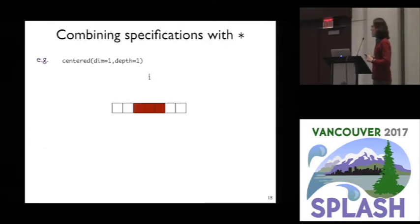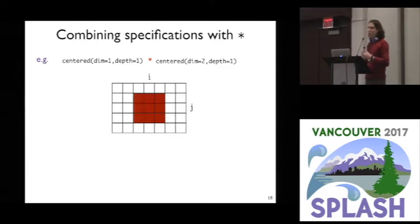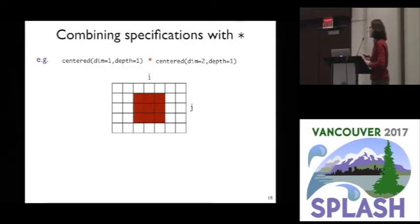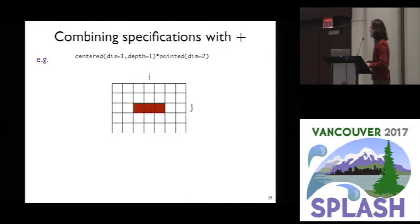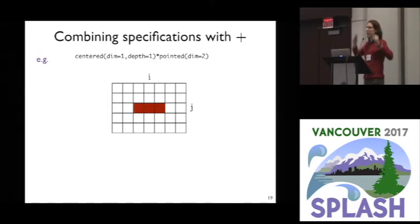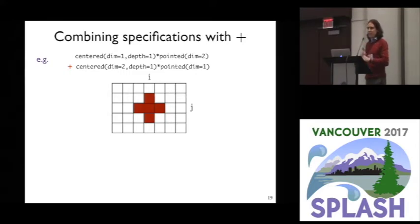For the multiply combinator: say I've described a centred region in dimension one to depth one; I can multiply this by another region, here in dimension two. That gives a bounding box of the two regions — you can think of it as a Cartesian product or conjunction of the constraints. So now we've described a block of array accesses where you're reading from the central point and all the elements around it.